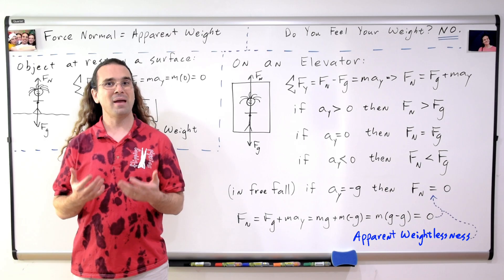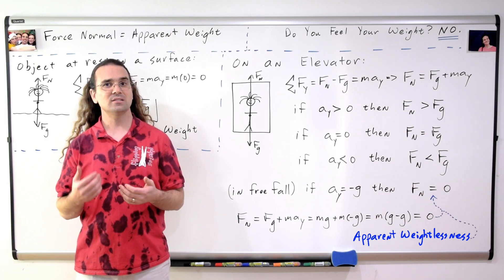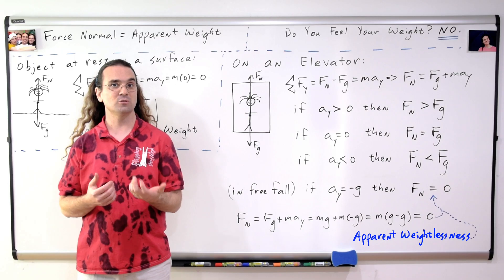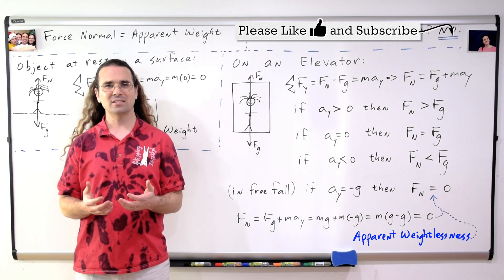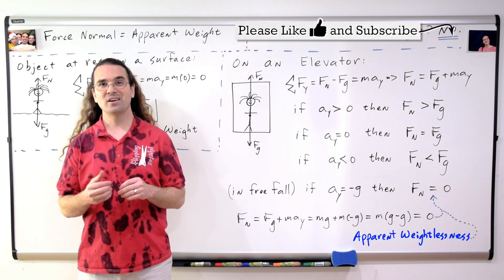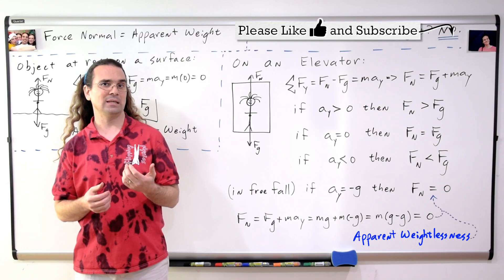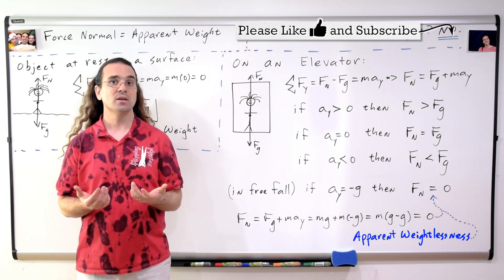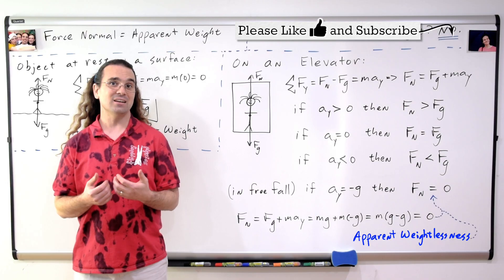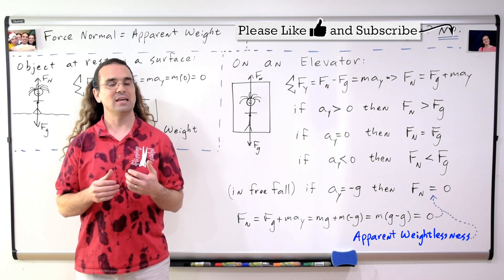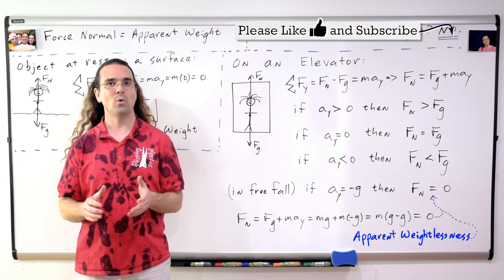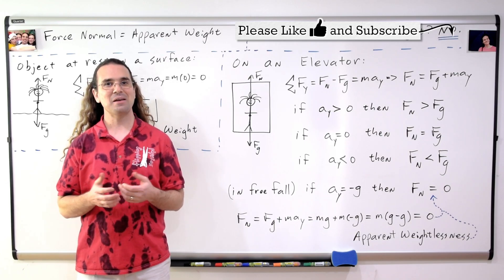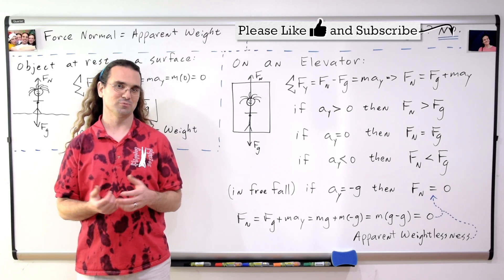This is called apparent weightlessness, and it is the same thing which happens to astronauts in the International Space Station. Astronauts in the International Space Station are not actually weightless; however, they have no force normal acting on them, so they feel as if they are weightless. Again, this is called apparent weightlessness. Thank you very much for learning with me today. I enjoyed learning with you.